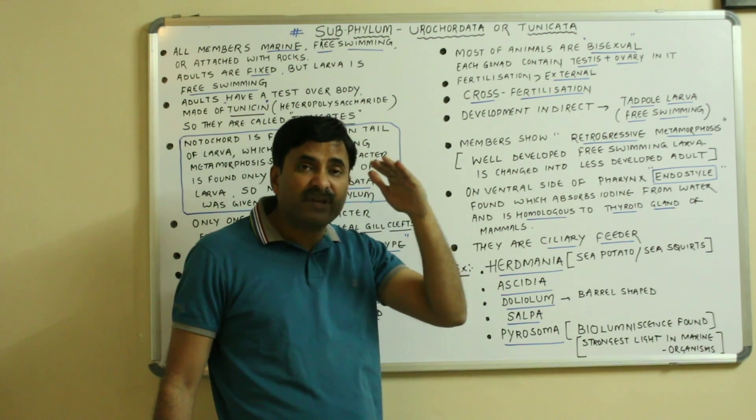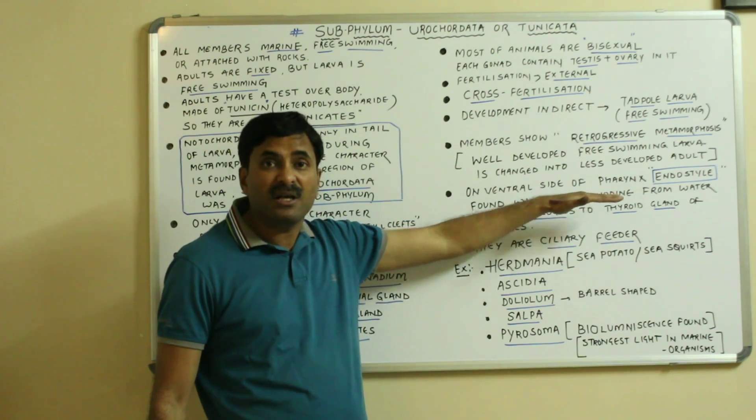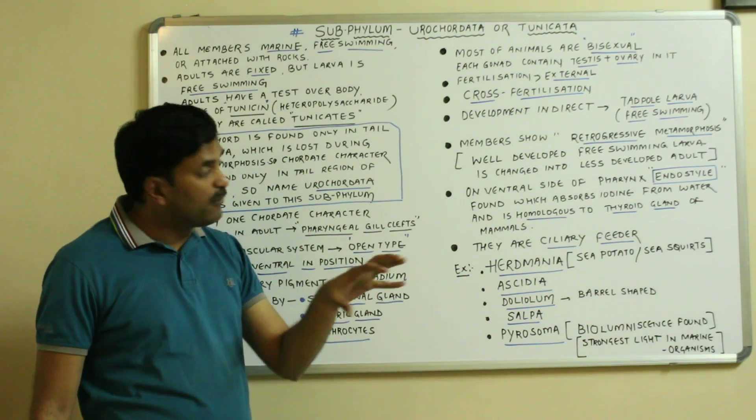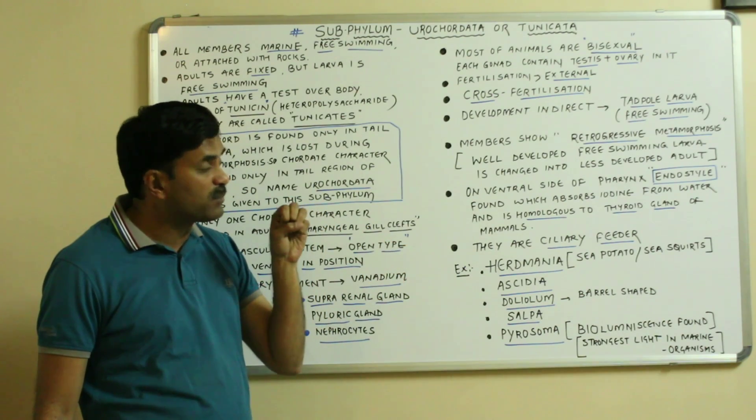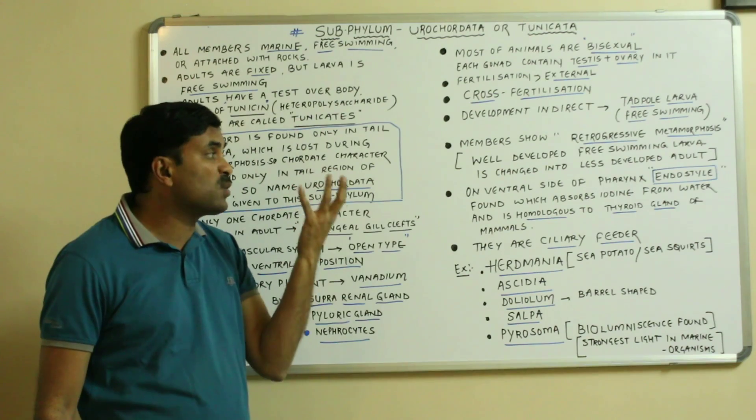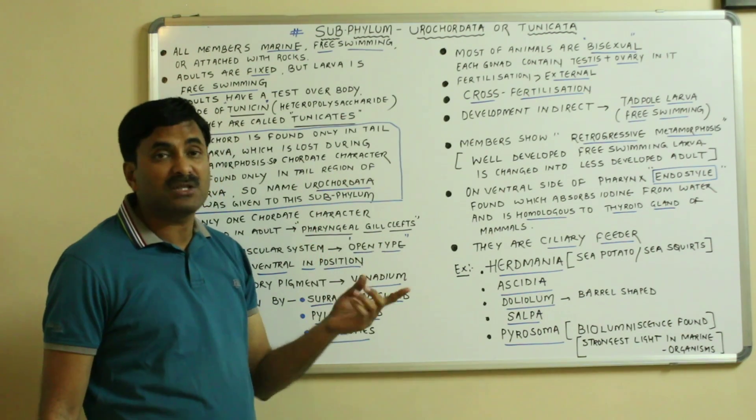On the ventral region of the pharynx region they have an endostyle and this endostyle is having the power to absorb the iodine from the water and therefore it is designated as that it is homologous to the thyroid gland of the mammals.